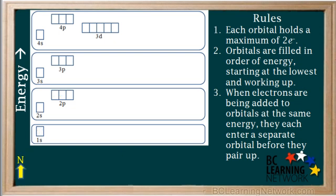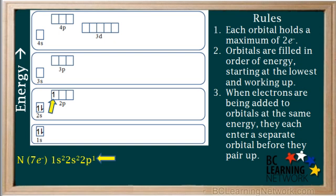Now we'll move up one element to nitrogen, which has seven electrons. The first two electrons go into the 1s orbital, and the next two go into the 2s orbital. There are three more to add. The fifth electron goes into the first 2p orbital, the 2px; the sixth electron goes into the next empty 2p orbital, the 2py; and the seventh electron goes into the third 2p orbital, the 2pz. Notice again how this follows rule number 3. In later chemistry courses, we'll find that this is called Hund's rule.